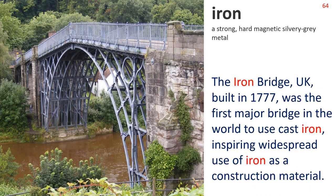Iron — a strong, hard, magnetic, silvery-grey metal. The Iron Bridge, UK, built in 1777, was the first major bridge in the world to use cast iron, inspiring widespread use of iron as a construction material.